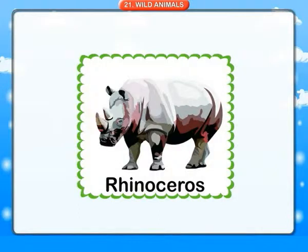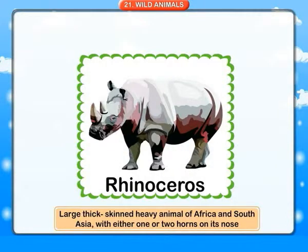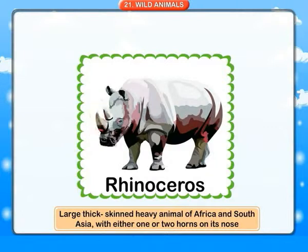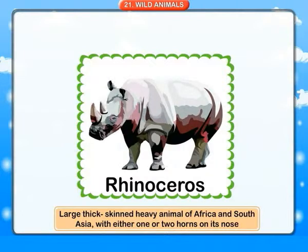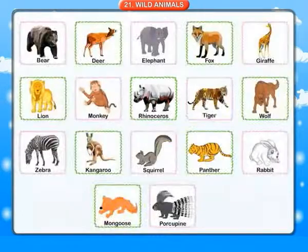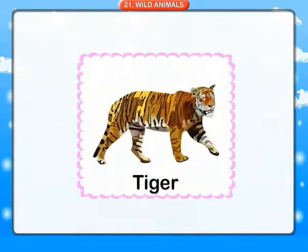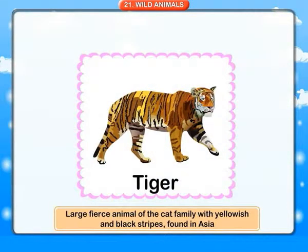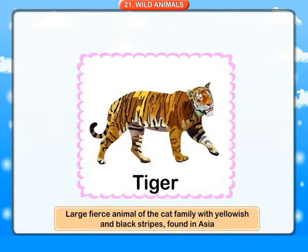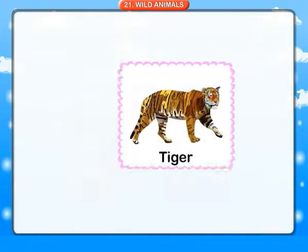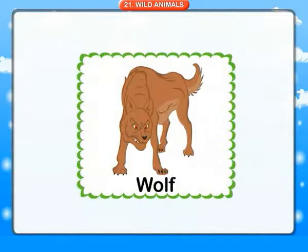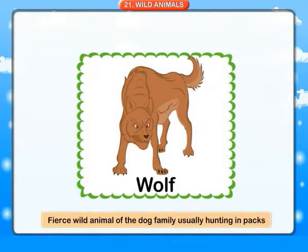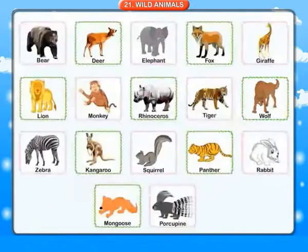Rhinoceros: a large, thick-skinned, heavy animal of Africa and South Asia, with either one or two horns on its nose. Tiger: a large fierce animal of the cat family with yellowish and black stripes, found in Asia. Wolf: a fierce wild animal of the dog family, usually hunting in packs.